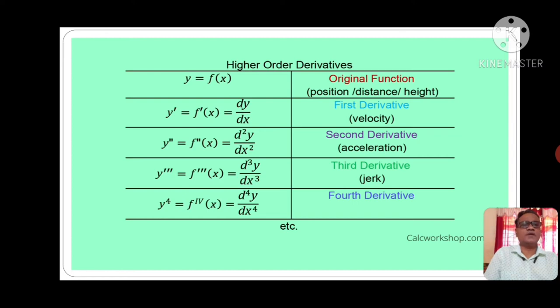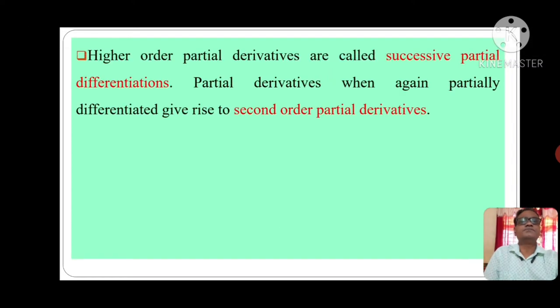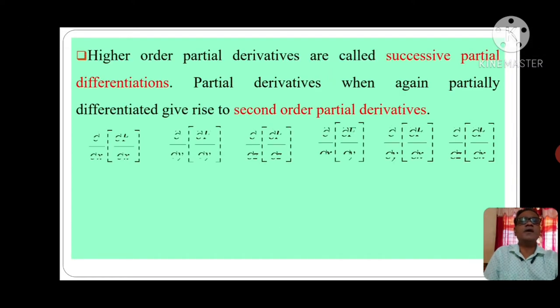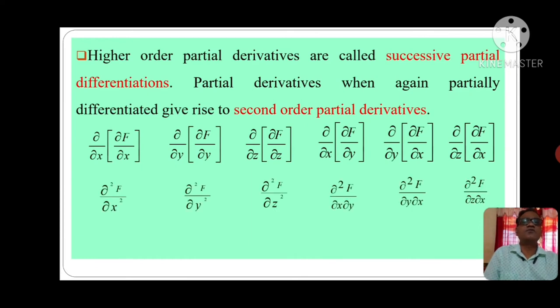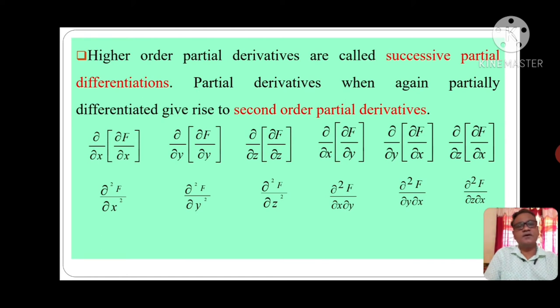Now, y⁴ is the fourth derivative. Higher order partial derivatives are called successive partial differentiations. Partial derivatives, when again partially differentiated, give rise to second order partial derivatives.